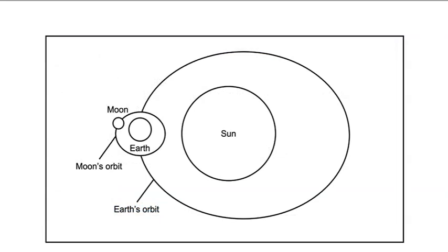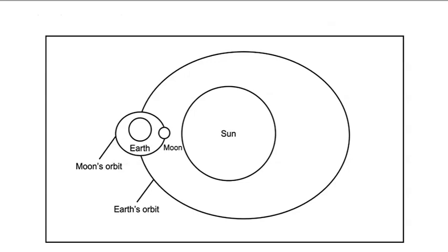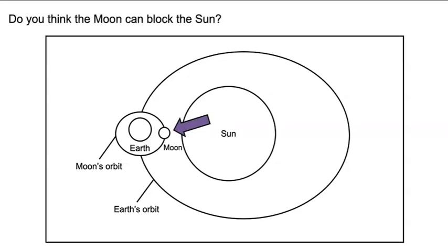Remember, we are trying to figure out whether the moon can cause a solar eclipse. Let's look at our space view diagram again. Can the moon be in a location where it can cause a solar eclipse? Yes — when the moon orbits Earth, the moon can move between Earth and the sun. But to cause a solar eclipse, the moon also needs to be able to block light and thermal energy from the sun. Do you think the moon can block the sun? Why or why not? Your second task after this lesson will be to answer this question. In our next lesson, we will investigate whether the moon can block the sun.